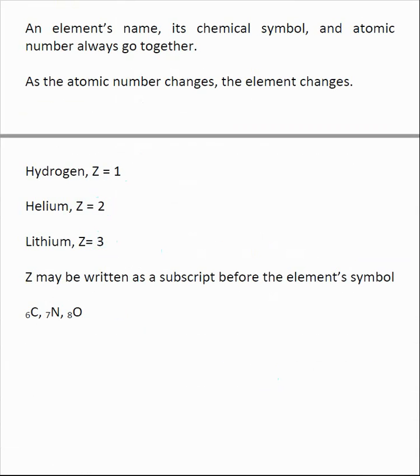They may write the letter Z as a subscript in front of the element's name. So here we see the Z value for carbon is six, nitrogen is seven, and oxygen is eight.